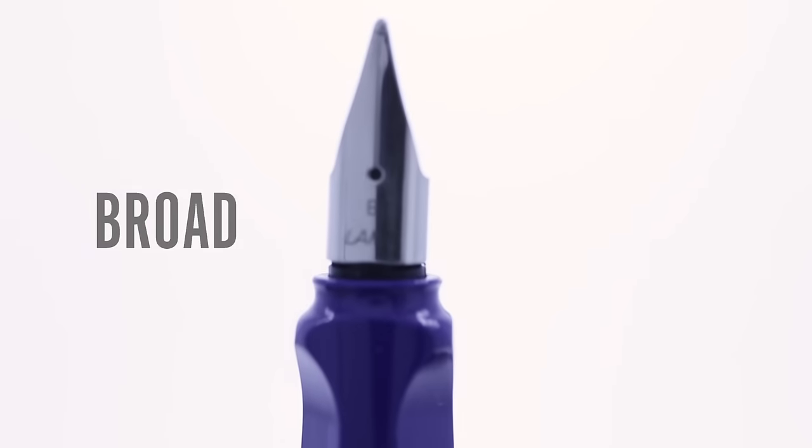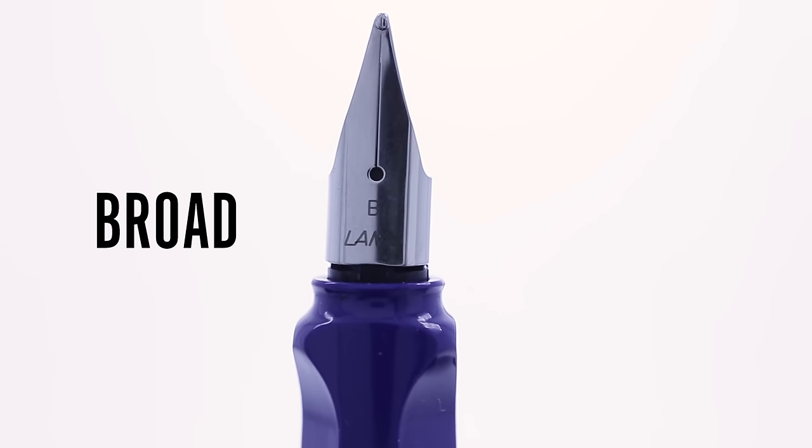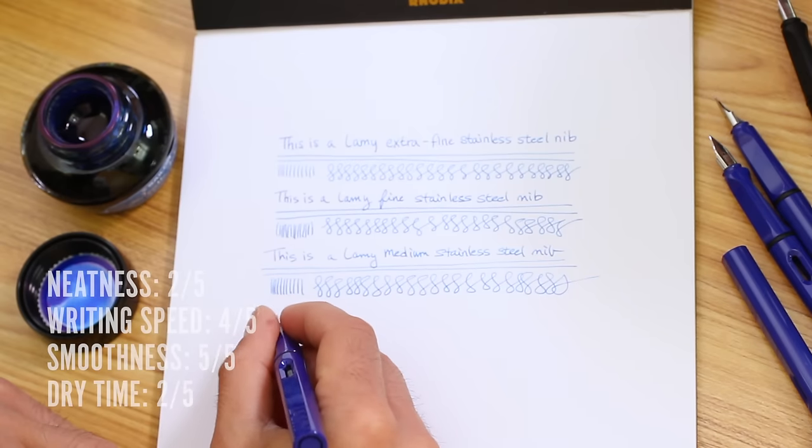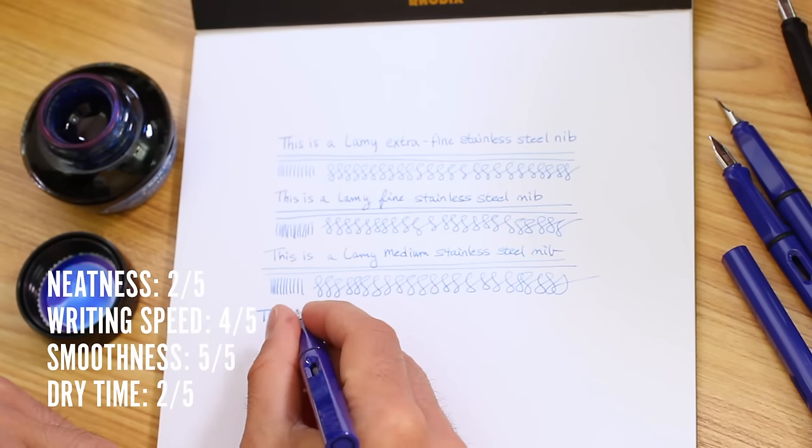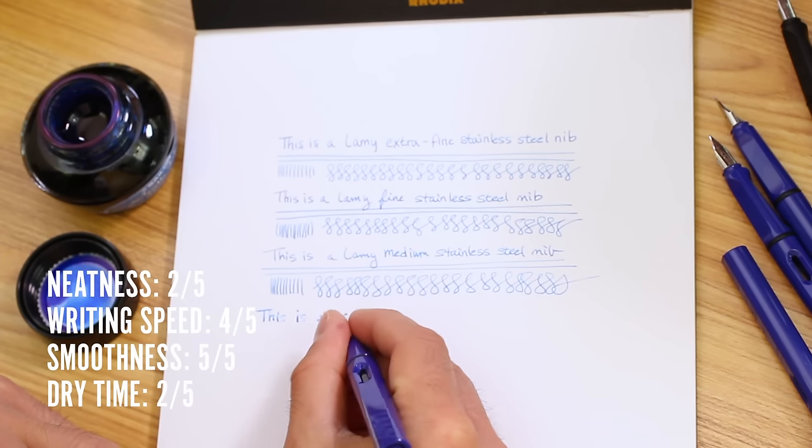Broad. Now we're dipping our toe into the deep end of the wet and wild. Most broad nibs lay down more ink and will keep up with a quick gestural handwriting style. An ink's shading, sheen, and shimmer, if applicable, are more evident when using a broad or larger nib size.